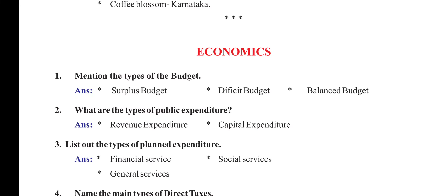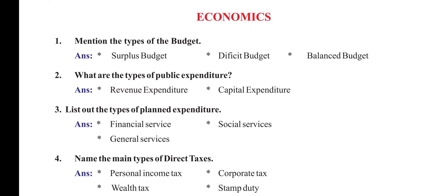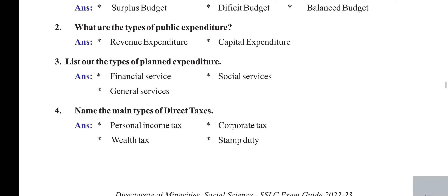Economics. Mention the types of budget: surplus budget, deficit budget, and balanced budget. What are the types of public expenditure? Revenue expenditure and capital expenditure. List out the types of planned expenditure: financial services, social services, and general services. Name the main types of direct taxes: personal income tax, corporate tax, wealth tax, and stamp duty.